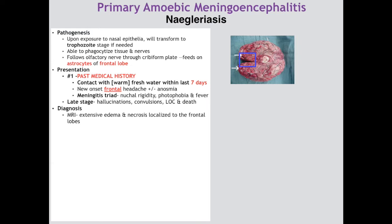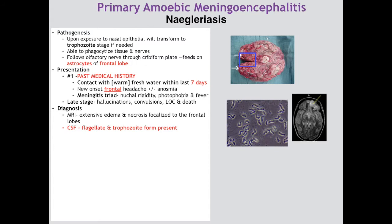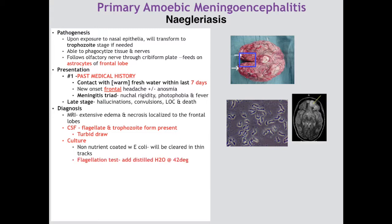Late stage — really only days after onset — the most commonly reported symptoms are hallucinations, convulsions, loss of consciousness, and death. On MRI you will see extensive edema and necrosis localized to the frontal lobes. On spinal tap, you can see the flagellate or trophozoite form; it will be a turbid (cloudy) draw, but obviously culture-negative since it is not bacterial. If confirmation is needed, culture is done on non-nutrient agar coated with E. coli, which will be cleared in linear lines because Naegleria feeds on bacteria. The gold standard is the flagellation test: add a drop of distilled water at 42°C to the culture plate and observe flagellation, because her flagellated form exists in hypotonicity.